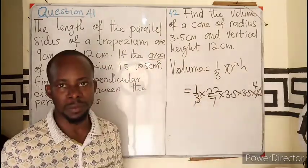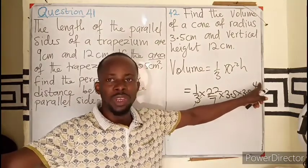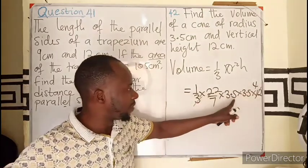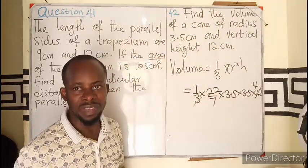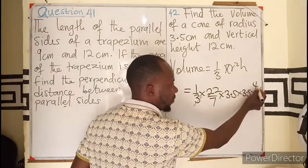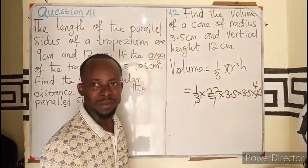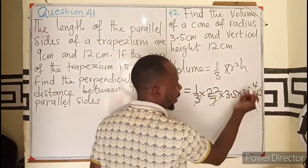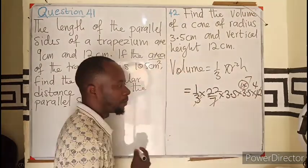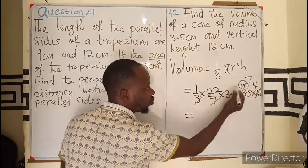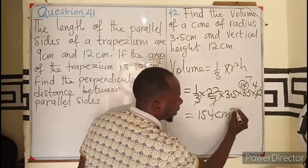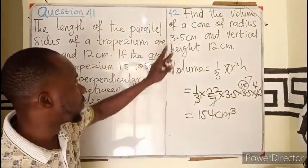2 times 2 is 4, 2 times 3.5 is 7, then remaining 2 times 3.5 is 7. So it means this will be 7 times 7. If I multiply this it will be 14, so 7 will go into that 14 which I'm having here as 7 times. So I'm only left with 22 times 7.